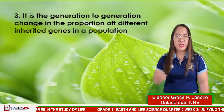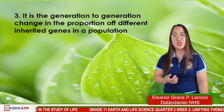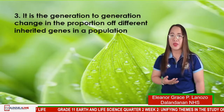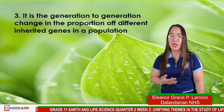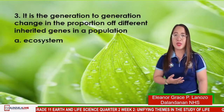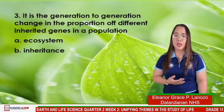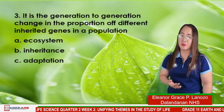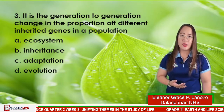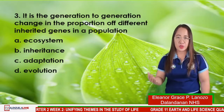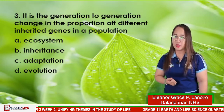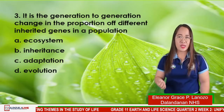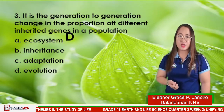And for number 3: it is the generation-to-generation change in the proportion of different inherited genes in a population. A — ecosystem, B — inheritance, C — adaptation, D — evolution. The answer is letter D.